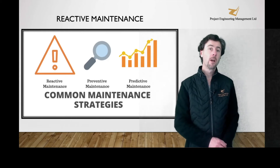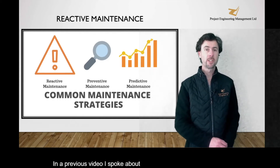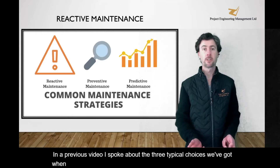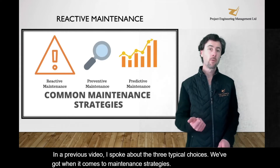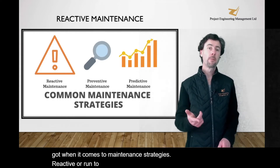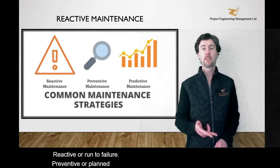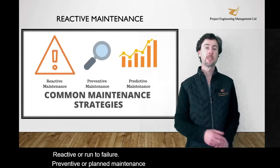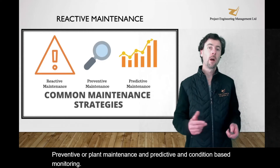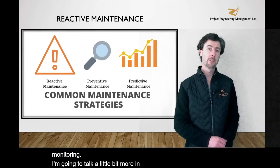In a previous video, I spoke about the three typical choices we've got when it comes to maintenance strategies: reactive or run to failure, preventive or planned maintenance, and predictive and condition-based monitoring. I'm going to talk a little bit more in detail about reactive maintenance.